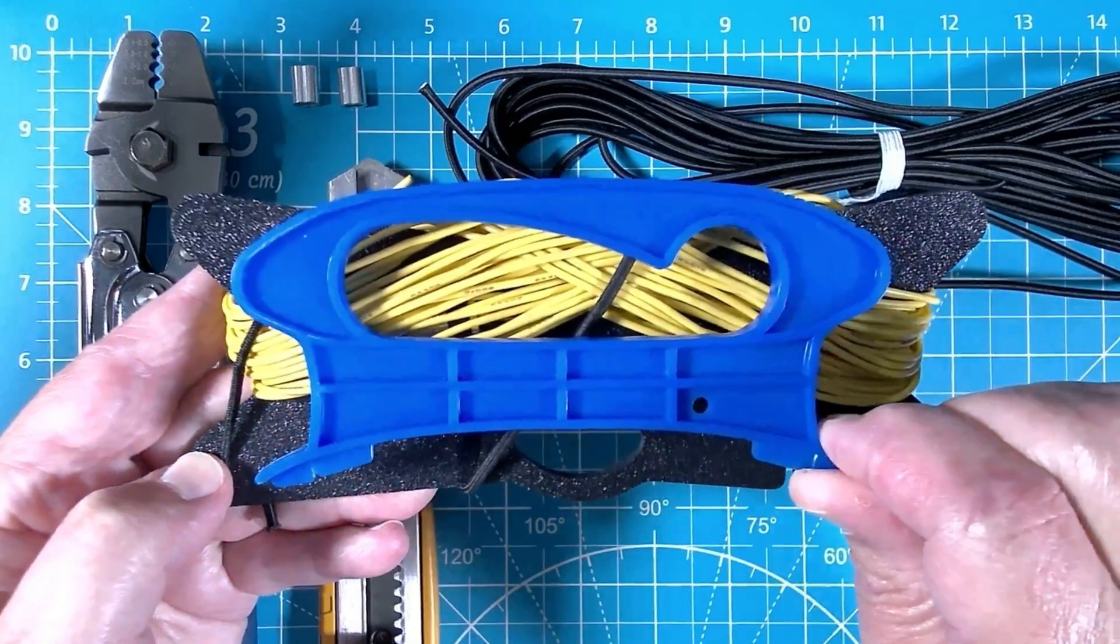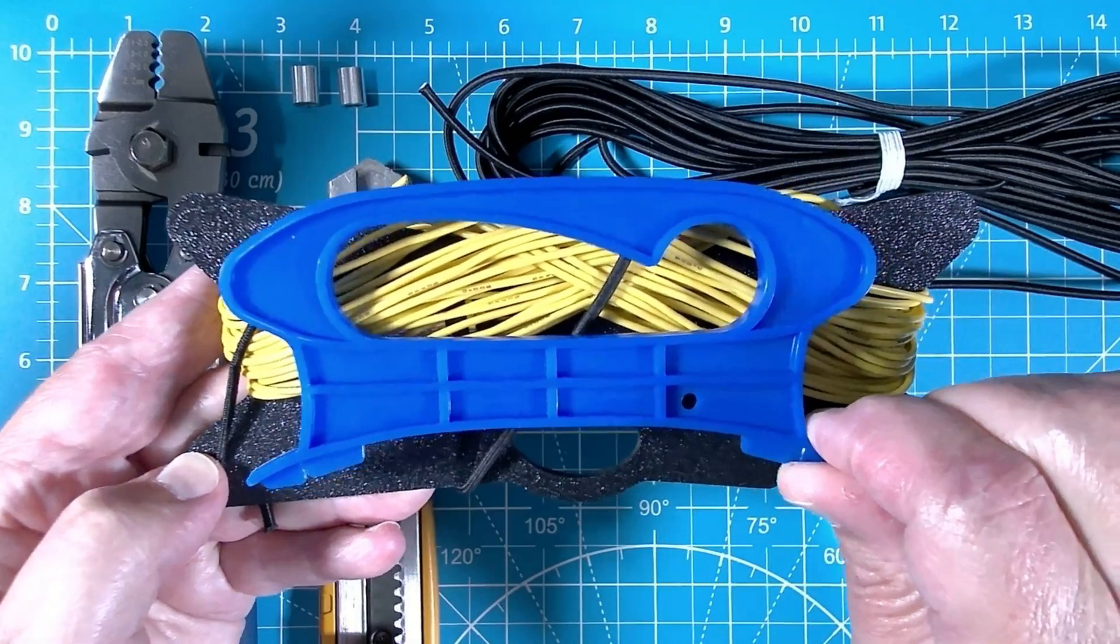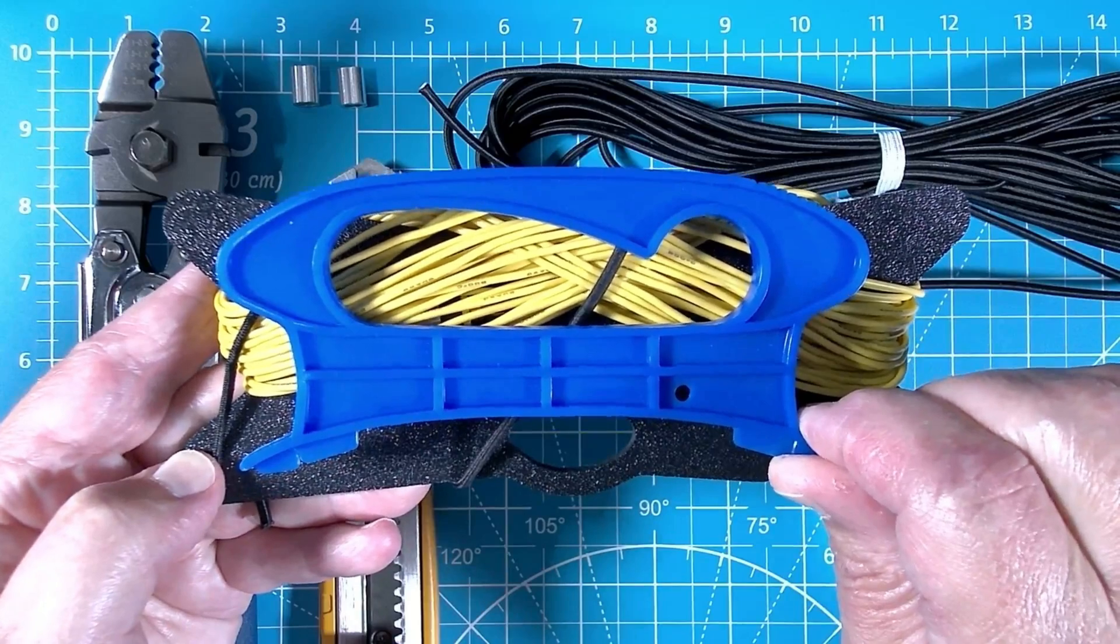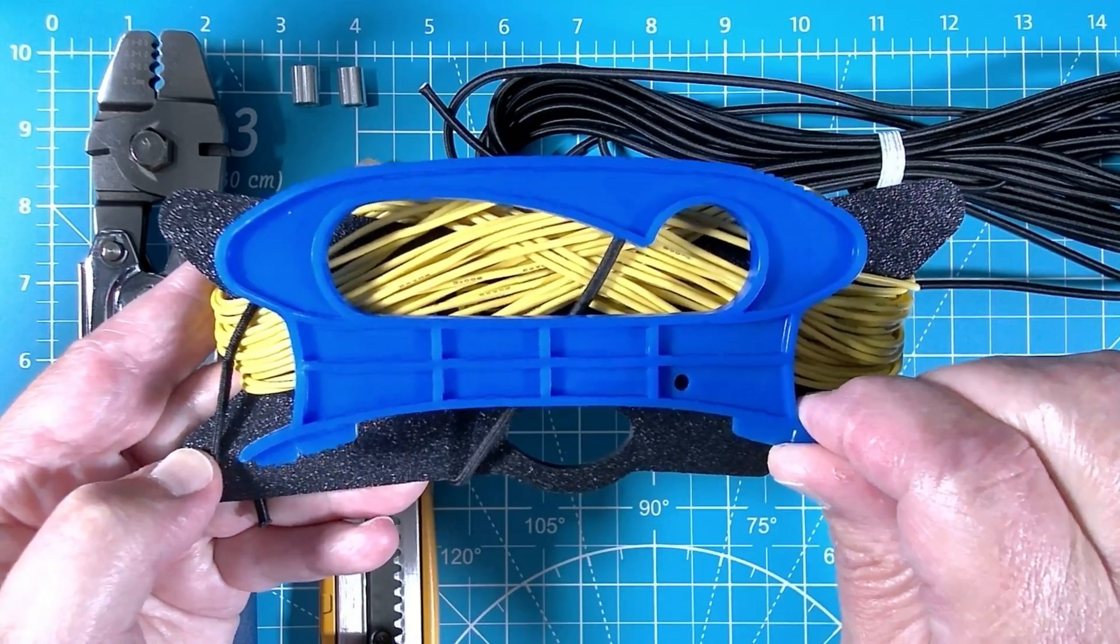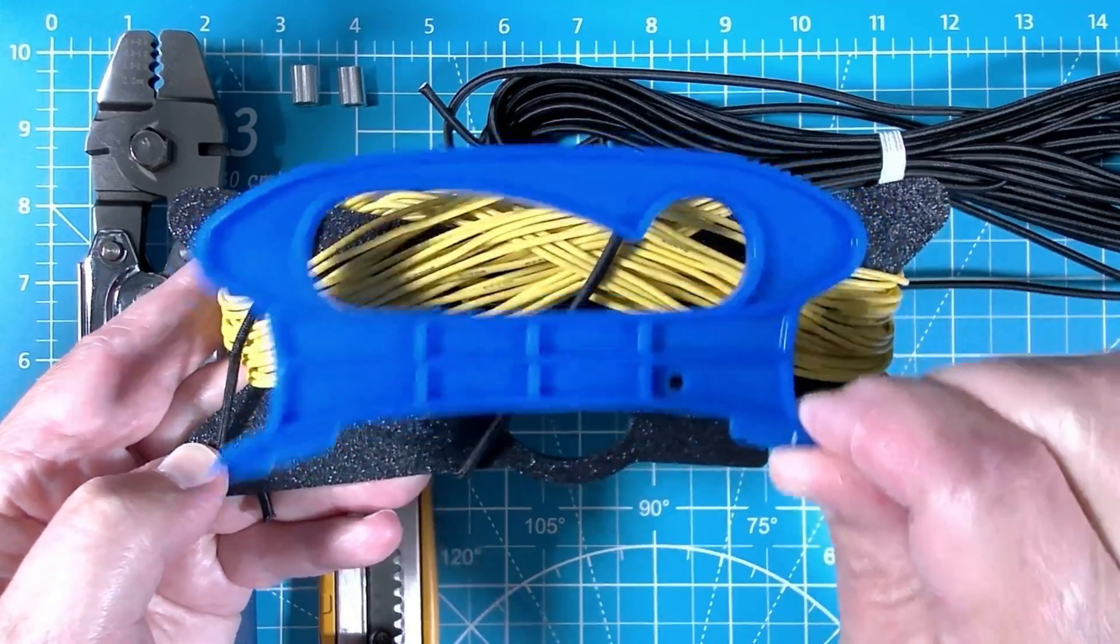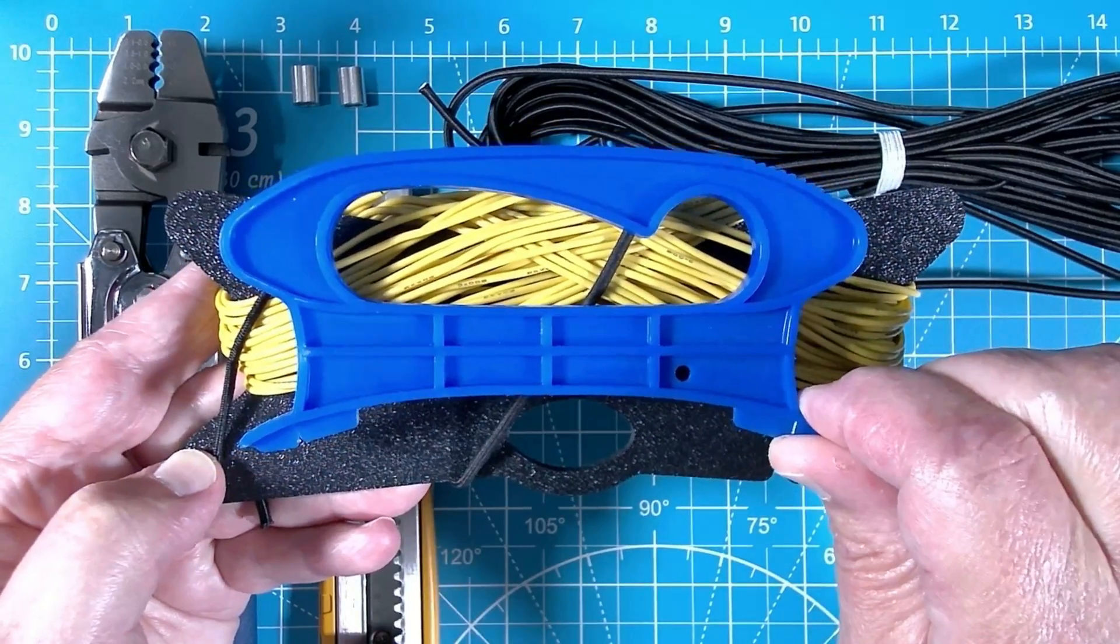This is a kite winder that I got off of Amazon. It came with some string on it, so I just removed the string and didn't use it anymore. This is working well for me, but you might have a better idea. I'd like to hear it.